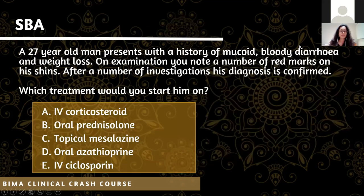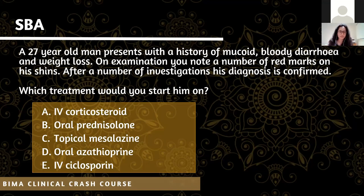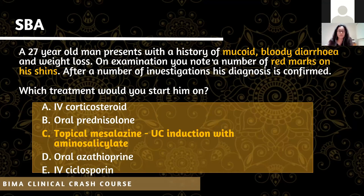Moving on to IBD management. An SBA showed mucoid bloody diarrhoea with erythema nodosum pointing towards ulcerative colitis. The way you induce treatment for UC is topical mesalazine. In a second SBA, the same patient had a severe flare requiring hospital admission - in that case, oral treatment isn't sufficient. It's a serious emergency, so you have to go in with IV steroids.